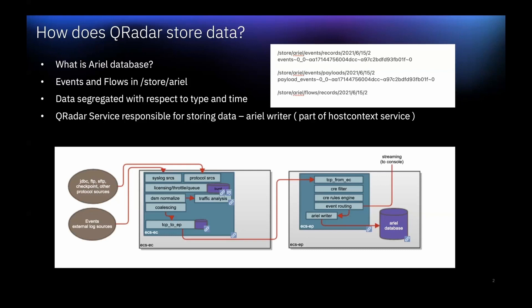After that, we have the Event Forwarding component, which applies routing rules to forward data to offsite targets such as an external syslog system, JSON system, and other SIEMs. Then we have the Ariel Writer component, which is responsible for writing data to the database. At the same time, the Streaming component sends real-time event data to the QRadar console when a user is viewing events from the Log Activity tab or viewing flows in the Network Activity tab.